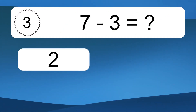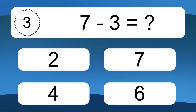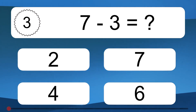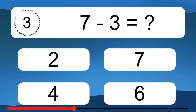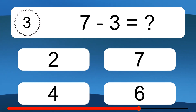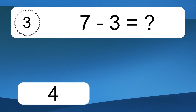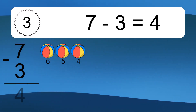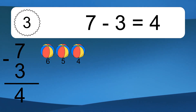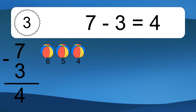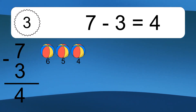7 minus 3 equals what? 7 minus 3 equals 4. Let's count it. 6, 5, 4.